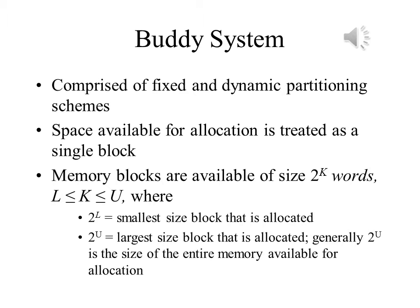An interesting compromise is the buddy system. Memory blocks are available of size 2^k words, where k is greater than or equal to l and less than or equal to u, where 2^l is the smallest size block allocated and 2^u is the largest. Generally, 2^u is the size of the entire memory available for allocation.